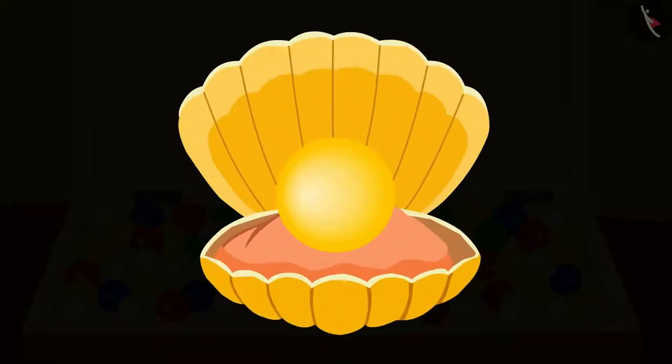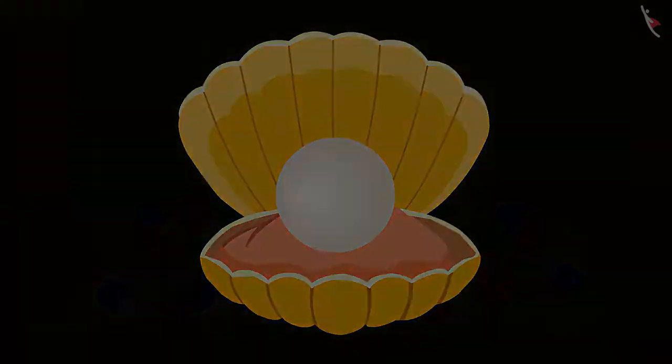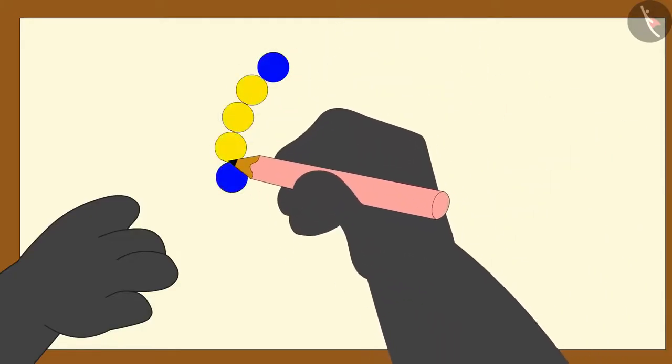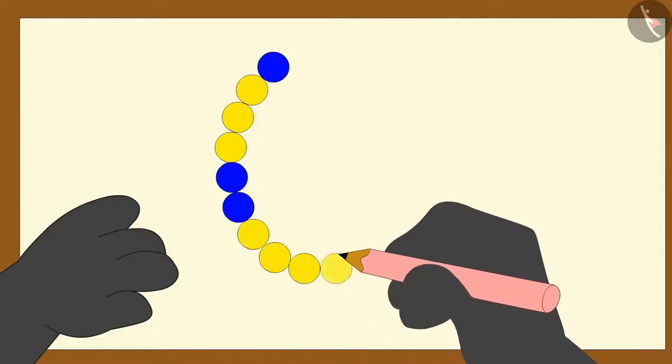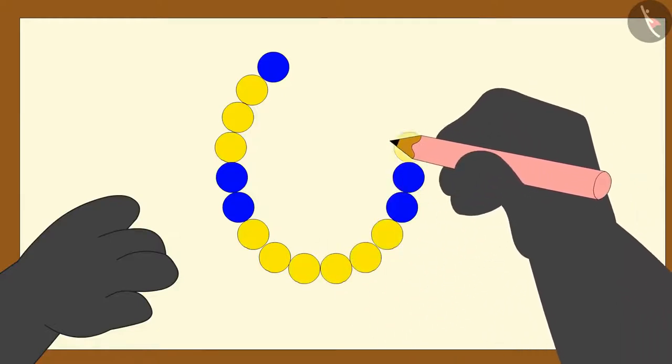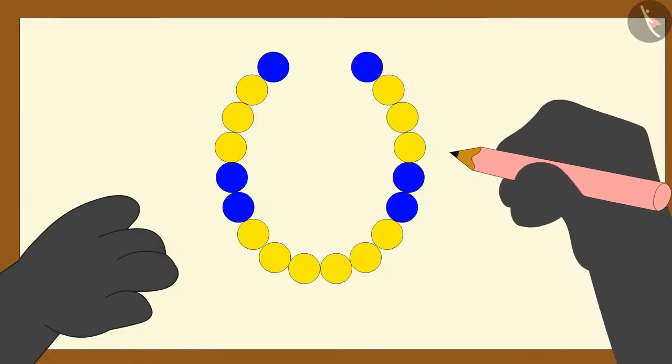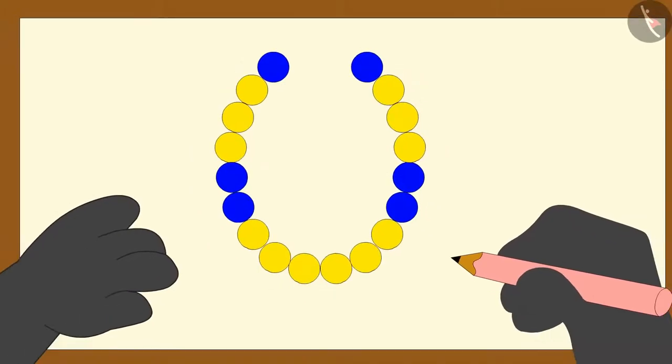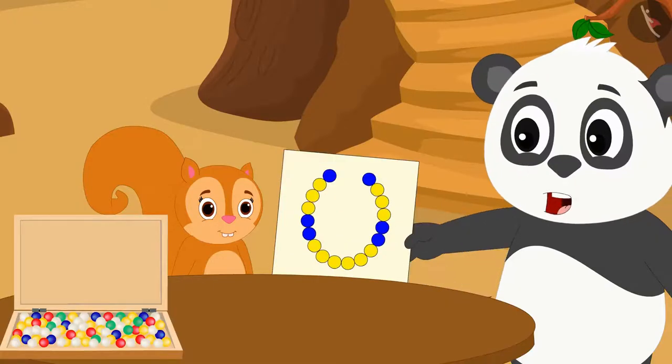yellow and white beads. He made a drawing of blue and yellow beads on a paper like this and said to Chanda, let's make a necklace of this design.